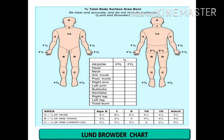The Lund-Browder chart is more accurate because it accounts for age and divides body parts more specifically. For example, while the Rule of Nines assigns 9% to the entire arm, the Lund-Browder chart assigns 1.5% to the palm, 1.5% to the forearm, and 2% to the upper arm. Each body part is divided separately, making it more specific and accurate than the Rule of Nines.